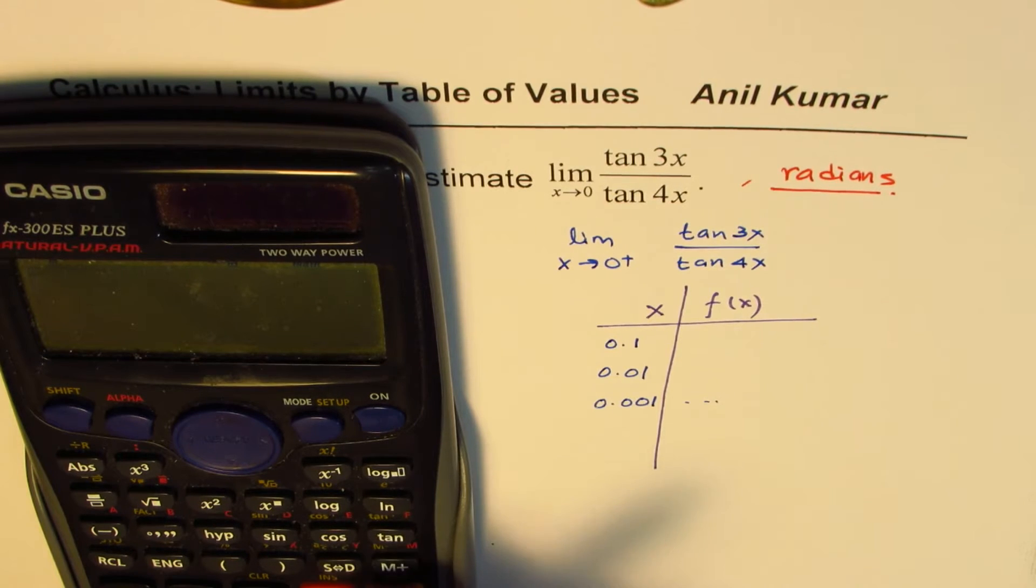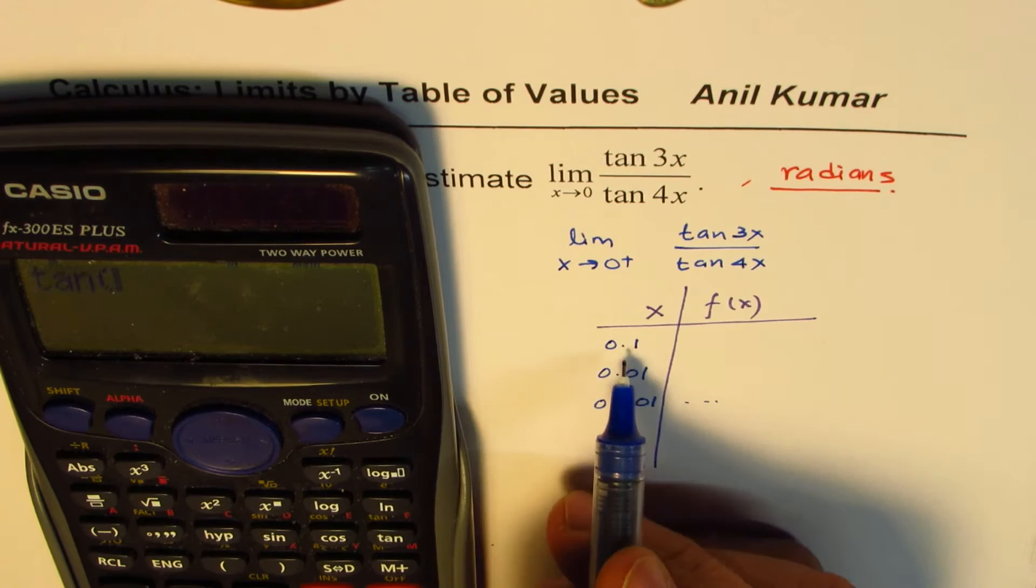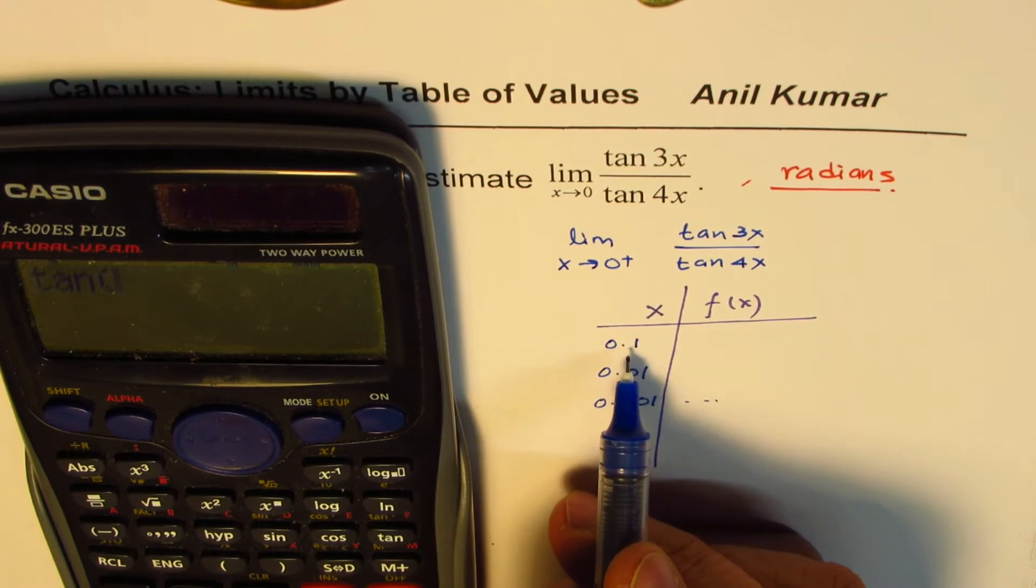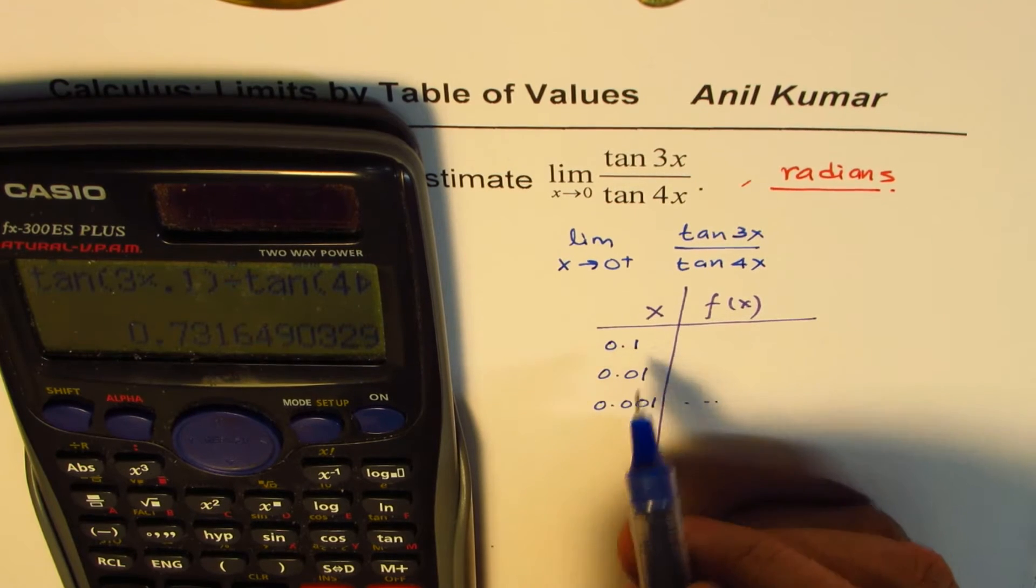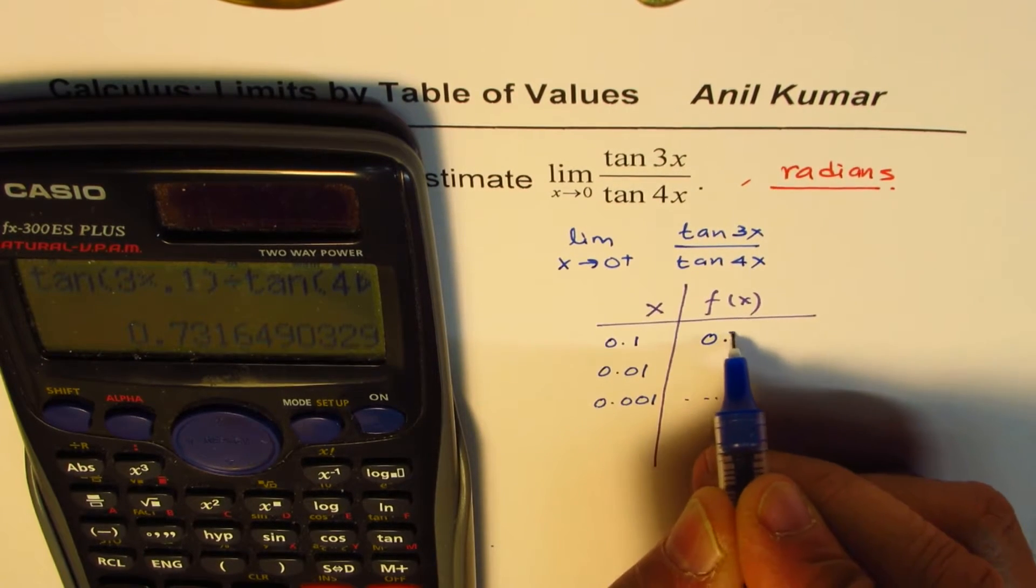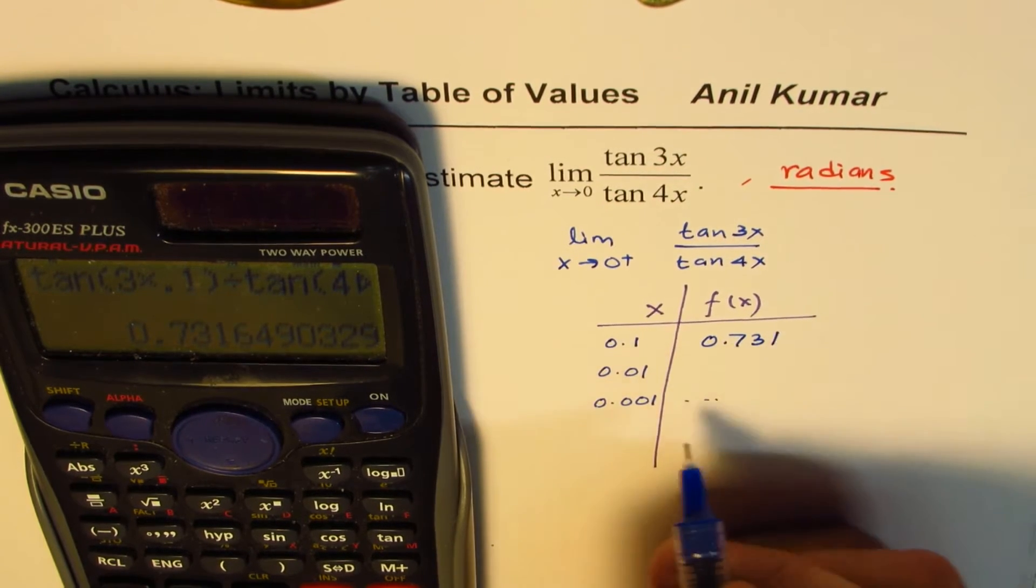So what we have here is, in the numerator, we have tan 3 times 0.1. So that is, you could write 3 times 0.1, bracket close, divided by tan 4 times 0.1, bracket close. So for 0.1, we get a value which is 0.731.